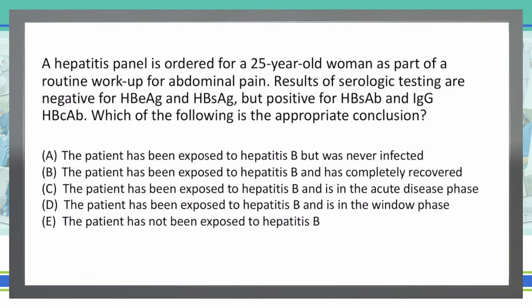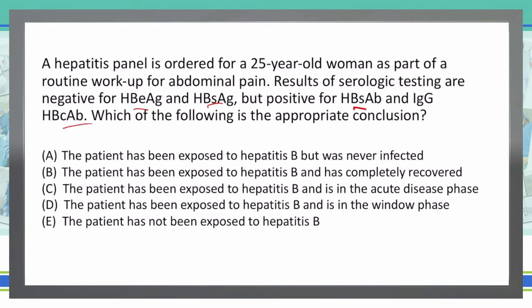We're looking for patients that have negative envelope antigen, negative surface antigen, but positive surface antibody and core antibody. The surface antigen is one of the first things that goes up, so if they have a negative surface antigen, that tells me they're not in an acute infection. So let's see if any options reflect that — C is the acute phase, so we know acute phase is out.